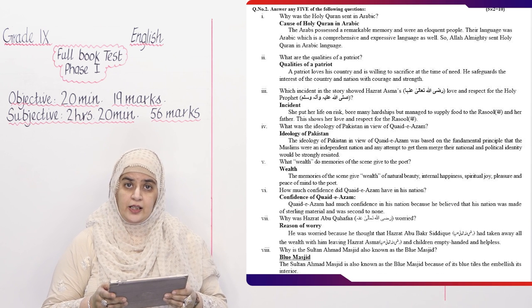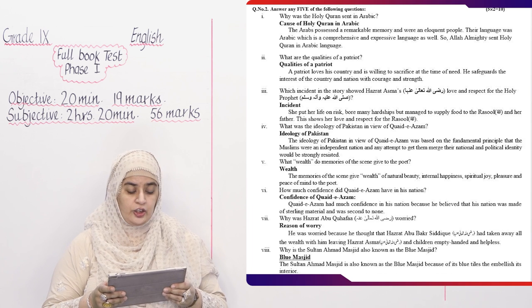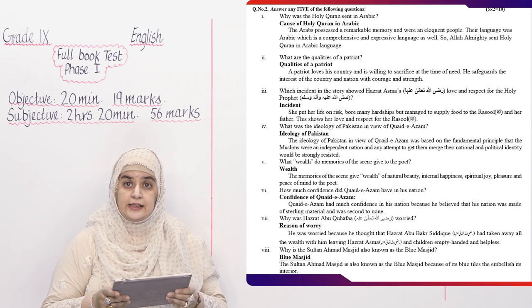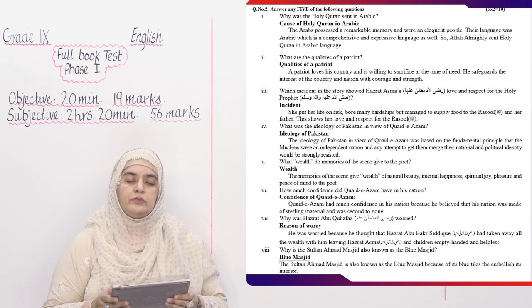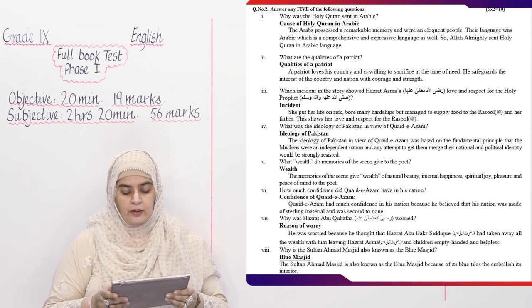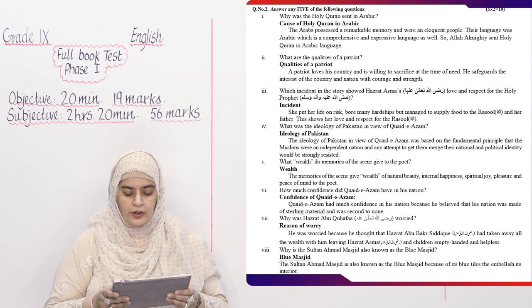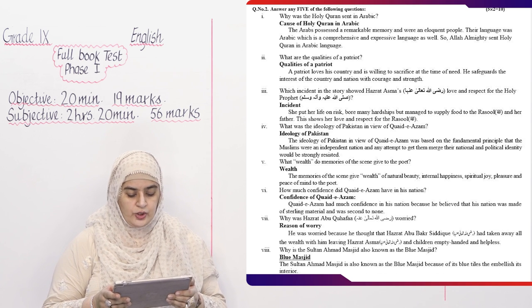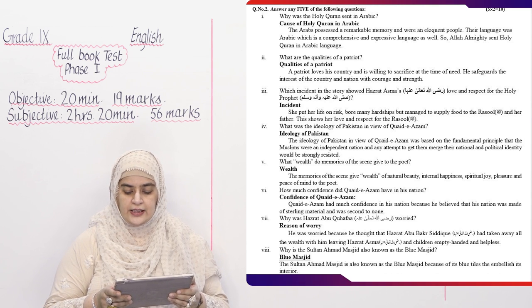Question number five: What wealth the memories of this scene gave to the poet? And answer wealth. The memories of the scene gave wealth of natural beauty, internal happiness, spiritual joy, pleasure and peace of mind to the poet. Question number six: How much confidence did Quaid-e-Azam have in his nation? And your answer is confidence of Quaid-e-Azam. Quaid-e-Azam had much confidence in his nation because he believed that his nation was made of sterling material and was second to none. Question number seven: Why was Hazrat Abu Qahafa R.A. worried? And your answer is he was worried because he thought that Hazrat Abu Bakr Siddique R.A. had taken away all the wealth with him leaving Hazrat Asma R.A. and children empty handed and helpless. Last question: Why is the Sultan Masjid also known as the Blue Masjid? And the answer is Blue Masjid with a heading. The Sultan Masjid is also known as the Blue Masjid because of the tiles that embellish its interiors.